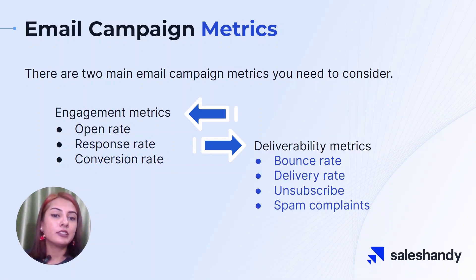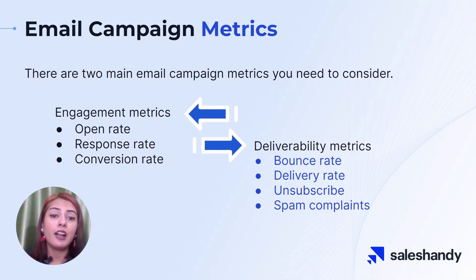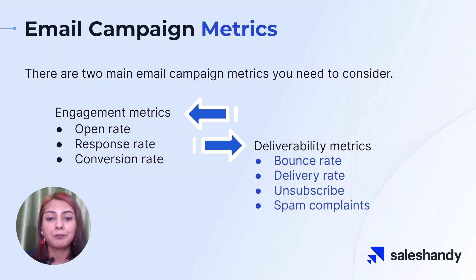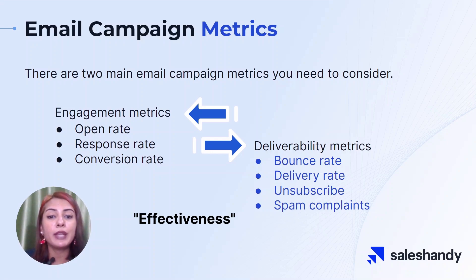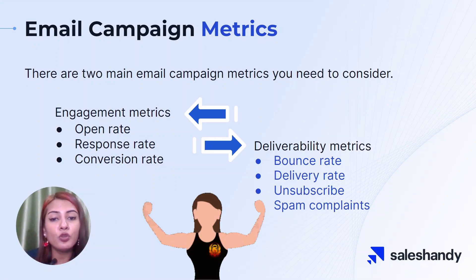Deliverability metrics, on the other hand, include bounce rates, spam rates, and unsubscribe rates. These metrics can help you understand how well your emails are being delivered to your audience and whether they're being marked as spam. By tracking both engagement and deliverability metrics, you can comprehensively understand your email campaigns' effectiveness and identify which areas need improvement.